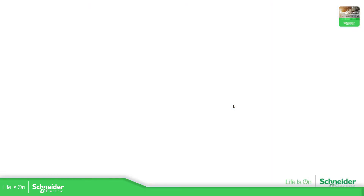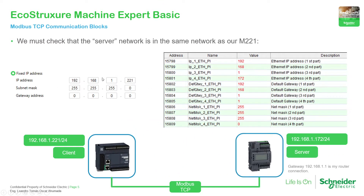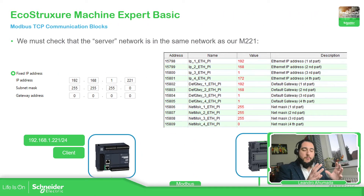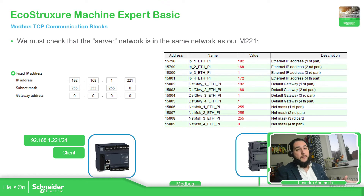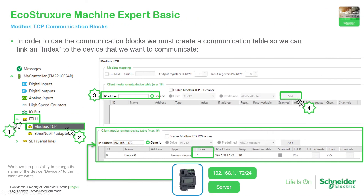The first thing we need to do is program the Ethernet port in the Modicon M221. For that, we just need to go to Configurations, select the Ethernet port, and then change the IP address. We need to check that the IP address we have selected is in the same range as the M172, otherwise the communication is not going to be possible. Also, make sure not to assign the same IP address to both devices, as duplicate IP addresses on the same network will cause problems.